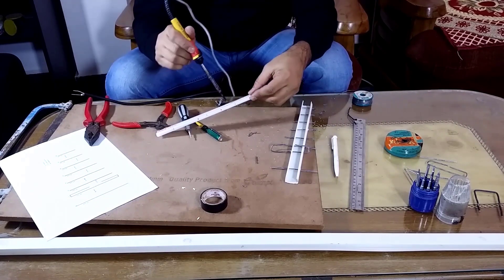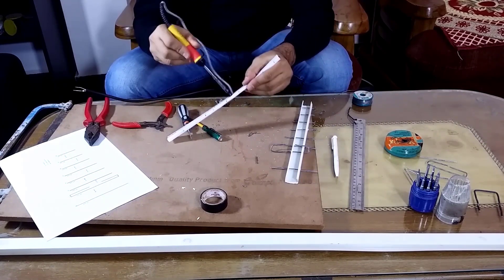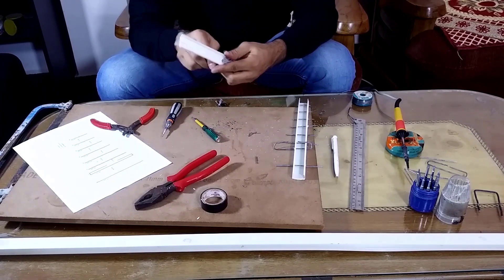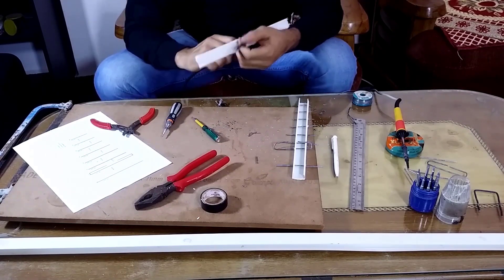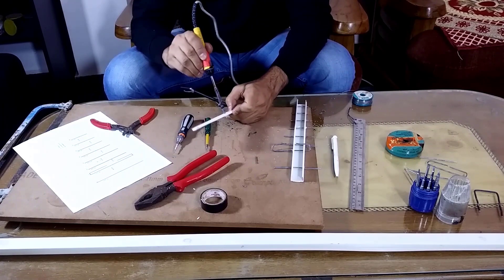To avoid the stress on the solder joint of the dipole element, I routed the coaxial cable through two holes punched on the casing cover and finally assembled the antenna together.